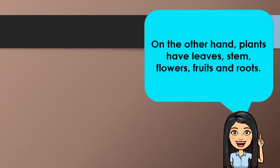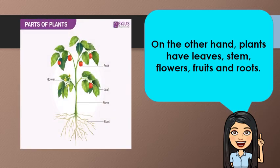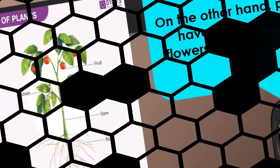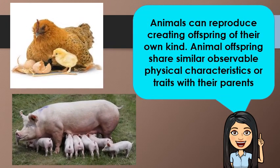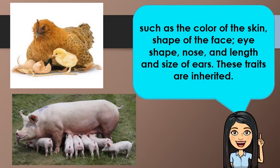On the other hand, plants have leaves, stem, flowers, fruits, and roots. Animals can reproduce, creating offspring of their own kind. Animal offspring share similar observable physical characteristics or traits with their parents. When we say traits, these are characteristics that can be observed in a living thing. When living things reproduce, they pass on traits to their offspring, such as the color of the skin, shape of the face, eye shape, nose, and length and size of ears. These traits are inherited from their parents.